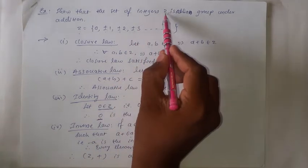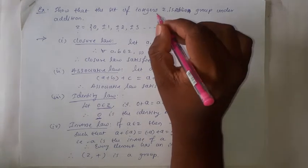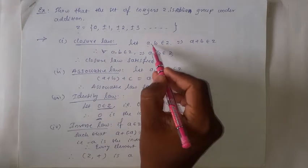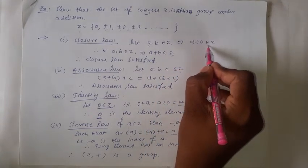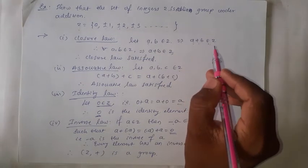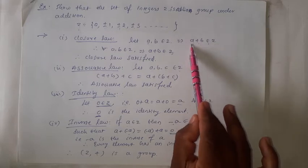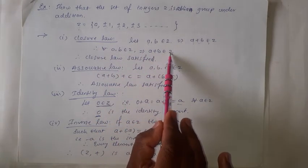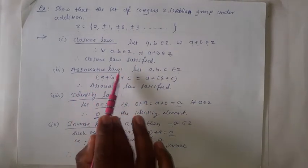The first property is the Closure law. Let us consider two elements a and b which are in the set Z. Then a + b belongs to Z. Here the binary operation is addition, so instead of a star b we write a + b. We know that the sum of two integers is again an integer, so a + b is an integer and therefore a + b also belongs to Z. So for all a, b belonging to Z, it implies a + b belongs to Z. Therefore, the Closure law is satisfied for the set of integers.